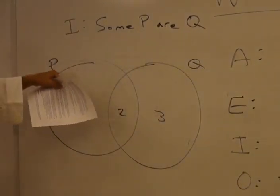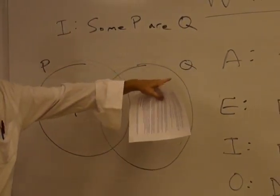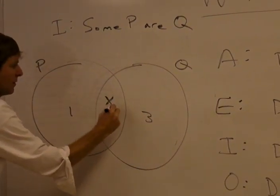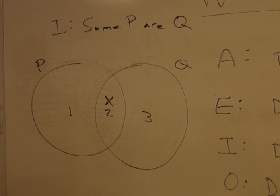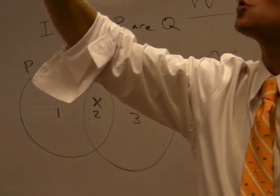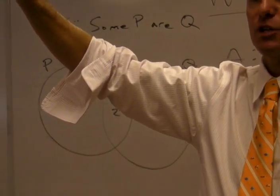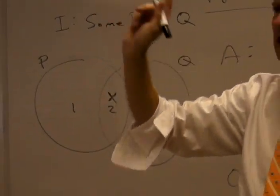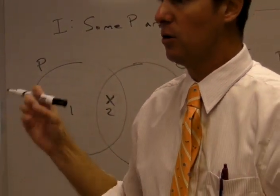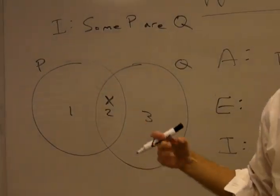So if we have some philosophy professors are persons who wear bow ties, recall that when we diagram particular statements, we designate an X where there is at least one member. That's what some means. That means we know there's at least one really existing philosophy instructor who is a bow tie wearing person.